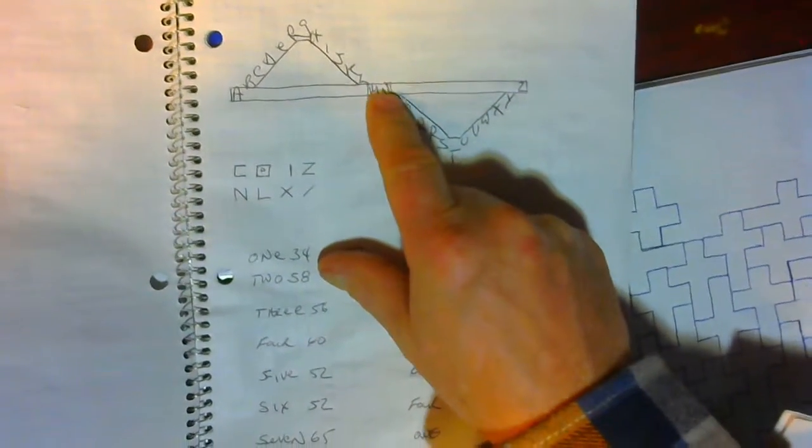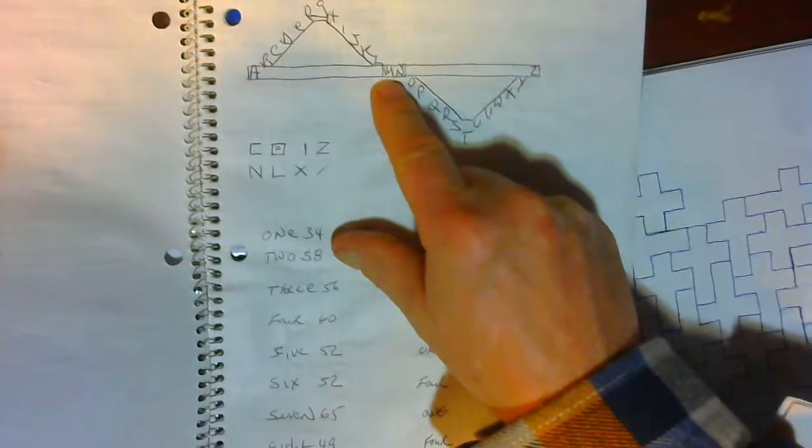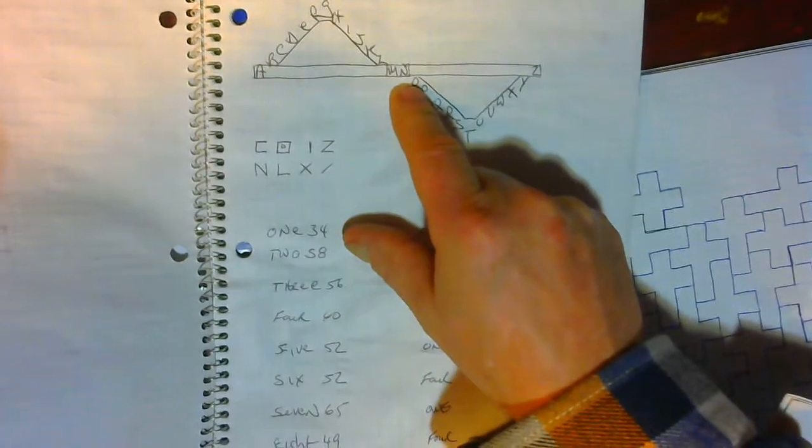When we reach this position, the reverse numbers put N here and M here. Total of 2727 between L and O.